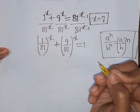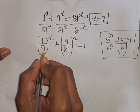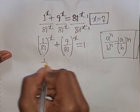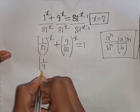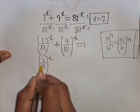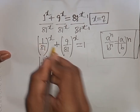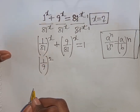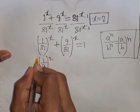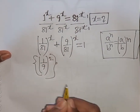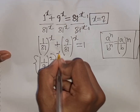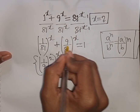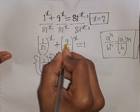Now 1 over 81 can be written as (1 over 9)^2, since 1 squared is 1 and 9 squared is 81. Then this first bracket can be written as (1/9)^2 to the power of x, and the second term becomes (9 over 81)^x.